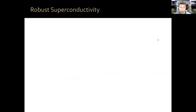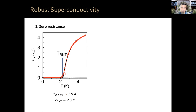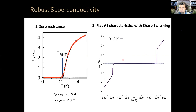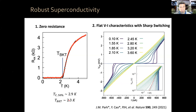Let me show you first that this system is a robust superconductor. Resistance goes down to zero. You can fit this with the Halperin-Nelson formula to extract a BKT transition temperature of about 2.3 Kelvin at optimal doping and optimal electric field. TC at 50% is about 2.9 Kelvin. The system also shows flat voltage-current characteristics with sharp switching at base temperature. It has very high critical current and then switches abruptly. You can extract the BKT temperature from this analysis, which coincides with the previous estimate.